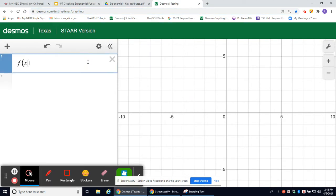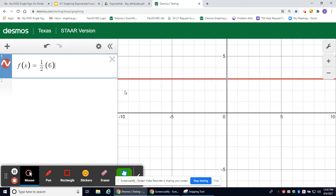Enter f(x) = 1/2(6) and the exponent can be shift 6, which will automatically format it as an exponent. x will be your exponent.